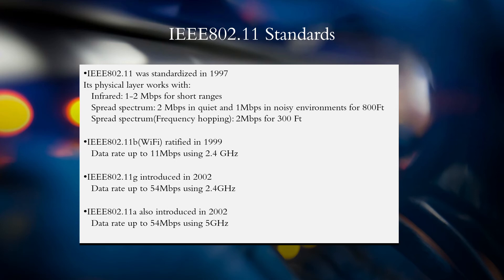The second type of physical layer uses a spread spectrum which provides up to 2 megabit per second data rate in quiet environments, and 1 megabit per second in noisy environments for distances up to 800 feet. The third type of physical layer is also a spread spectrum but uses frequency hopping, which can transmit data at 2 megabit per second for 300 feet.